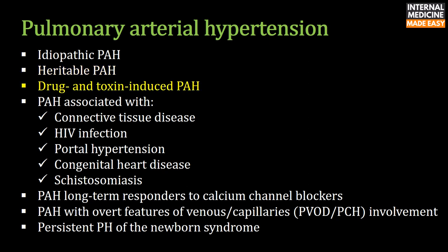Pulmonary arterial hypertension can be associated with exposure to certain drugs or toxins, particularly appetite-suppressant drugs such as aminorex, fenfluramine derivatives, and benfluorex. These drugs have been confirmed to be risk factors for pulmonary arterial hypertension.